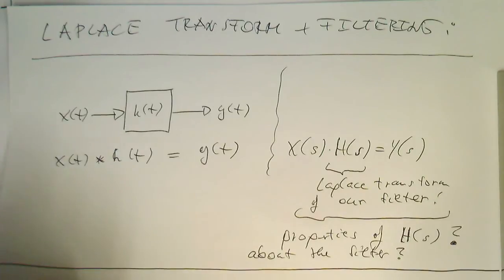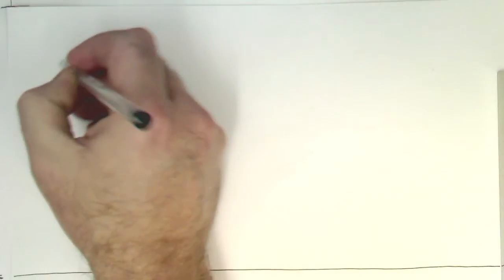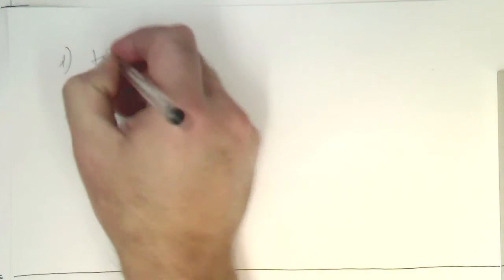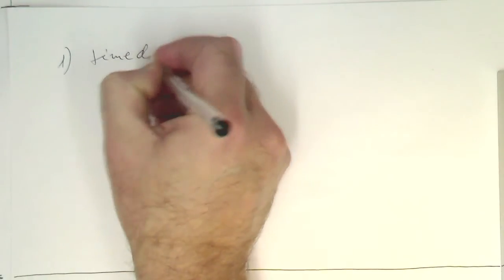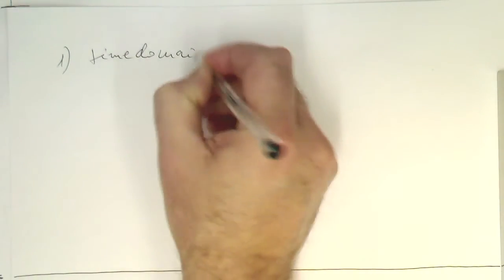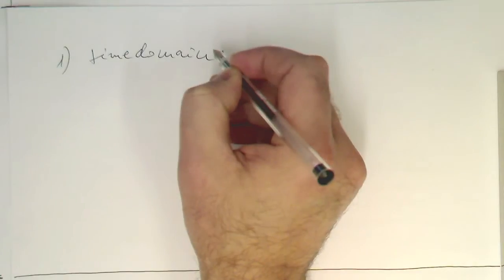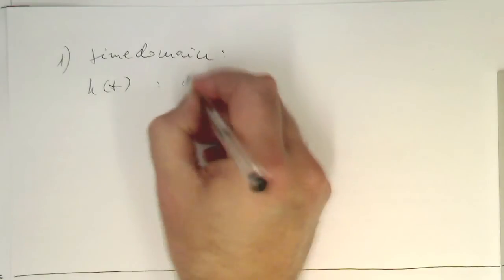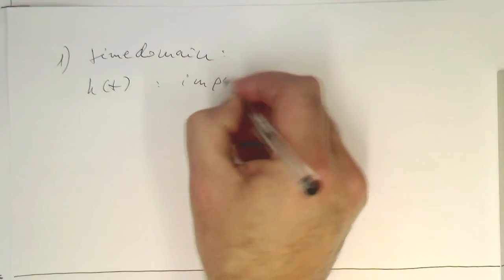Okay, let's have a look a bit closer towards this. Remember, in the time domain, if we just stick first with the time domain, our H of t, this was our impulse response.